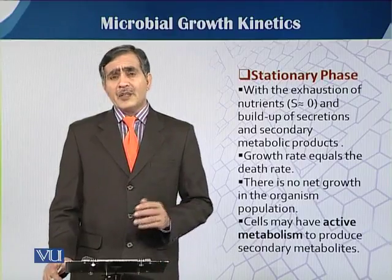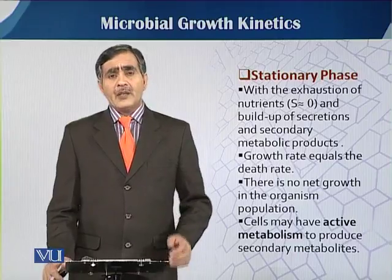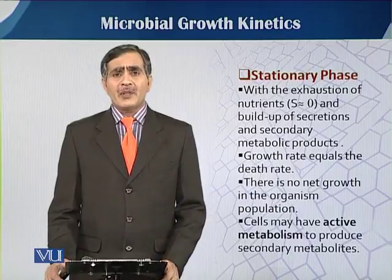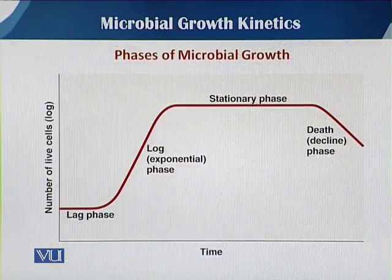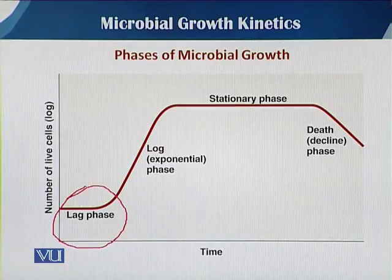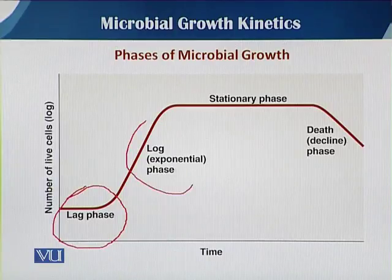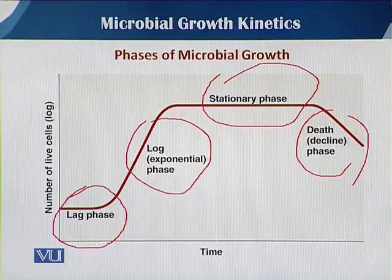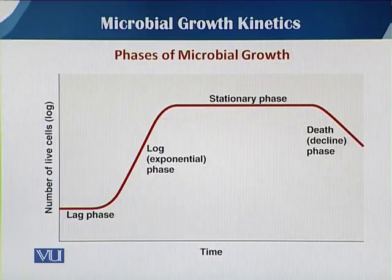In the stationary phase, cells remain active and their metabolism is mostly active, but this is also the stage when secondary metabolites are produced. In this diagram, you can see the different phases — lag phase, which is the first stage, then the exponential phase, then the stationary phase, and the last, which we call the decline phase. In the next slide, we will see what the decline phase is.